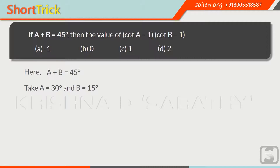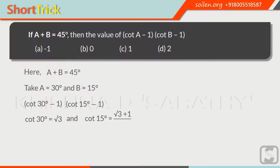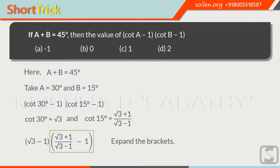Now place these in the given expression: cotangent of 30 degrees minus 1, times cotangent of 15 degrees minus 1. The value of cotangent of 30 degrees is the square root of 3, and the value of cotangent of 15 degrees is equal to the square root of 3 plus 1 over the square root of 3 minus 1. Now we will place these values. We can simplify by expanding the brackets, or alternatively, you can take the LCM.